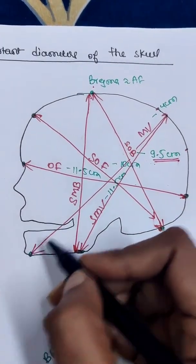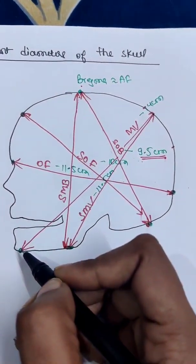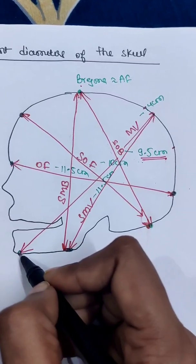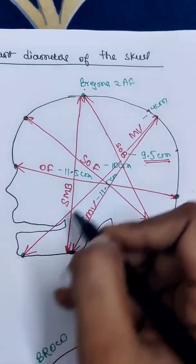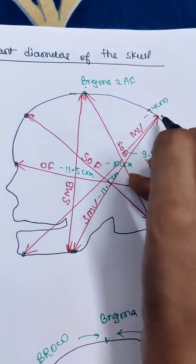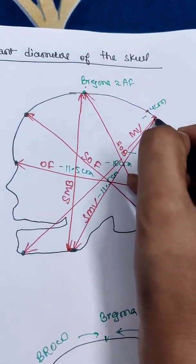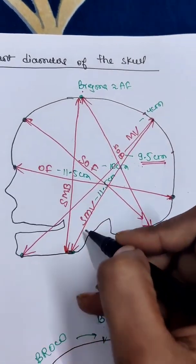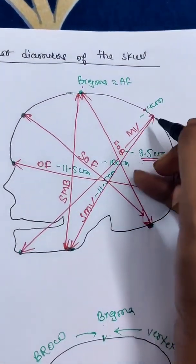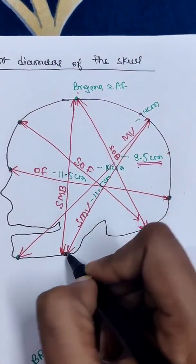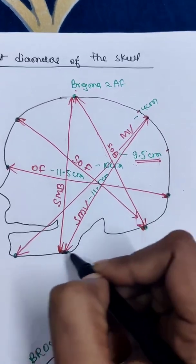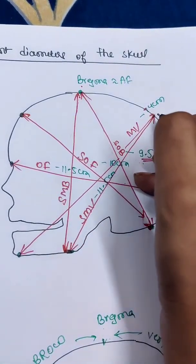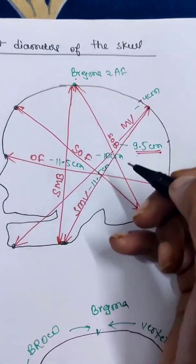Another diameter is the mento-vertical diameter. It extends from the mentum — that is the chin — to the highest point on the sagittal suture. This is the maximum diameter at 14 centimeters. The submentovertical diameter extends from the submentum — that is the floor of the mouth — to the highest point on the sagittal suture, and this is 11.5 centimeters.